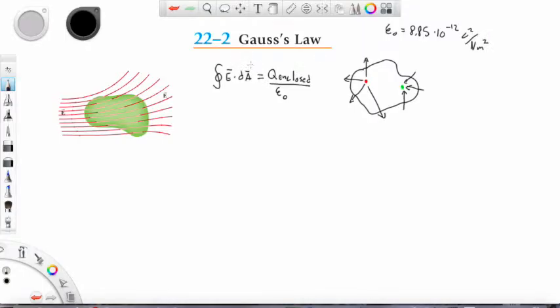The Gauss's law says that if we know something about the electric field on the surface we can say something about the charge that is inside the surface or the other way around. If you know how much charge is inside our surface we can tell something about the electric field at the surface. And this is the usual case when we are applying Gauss's law.